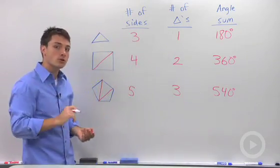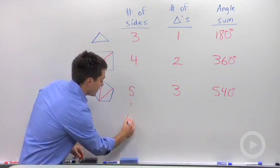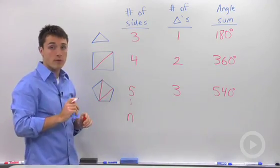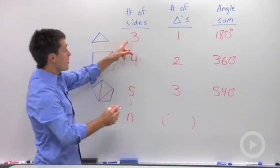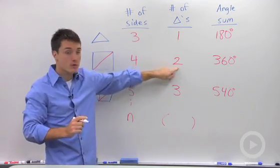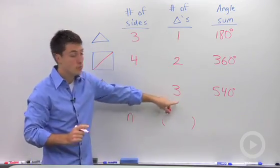So let's make this formula a little more general. Let's say for an n-sided polygon, the number of triangles that we're going to be able to draw is some number. Well, three minus two is one, four minus two is two, five minus two is three.